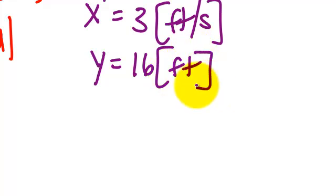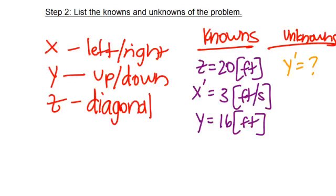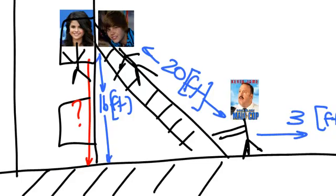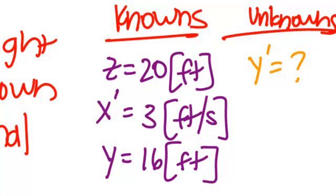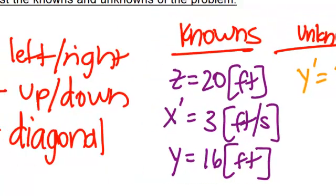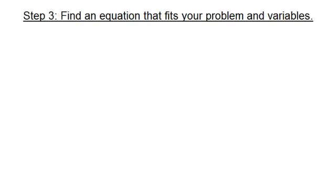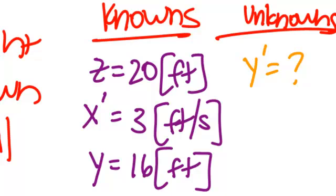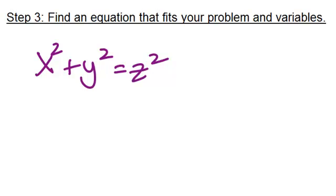Now I have listed the knowns and unknowns of this problem. On to the next step — Step 3 says to find an equation that fits your problem and variables. If you notice my diagram, what type of shape do you see? A triangle. Because of the triangle, there are two types of equations we could use — it could be the Pythagorean theorem, it could be area. But judging by my knowns and unknowns, looking for quantities x, y, and z, my best guess is the Pythagorean theorem. You may notice that it does not exactly fit my variables — do you see x prime and y prime? The Pythagorean theorem does not have a prime. So I need to do something to this equation to get those primes. What have we been studying? That's right — derivatives. So I'm going to implicitly differentiate the Pythagorean theorem. Now I have an equation that has all the unknowns and knowns I listed in the previous step.